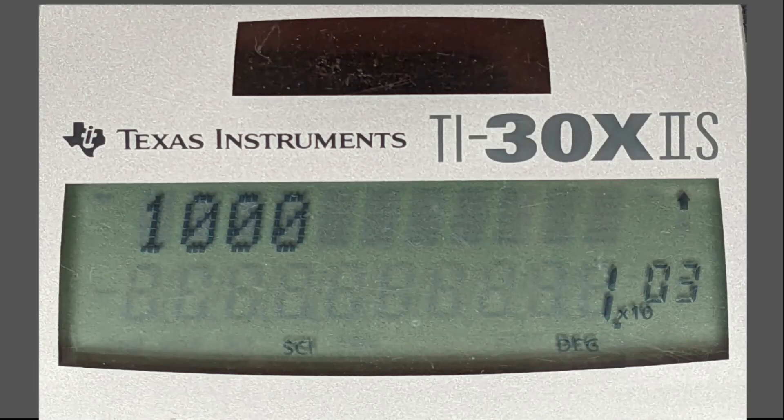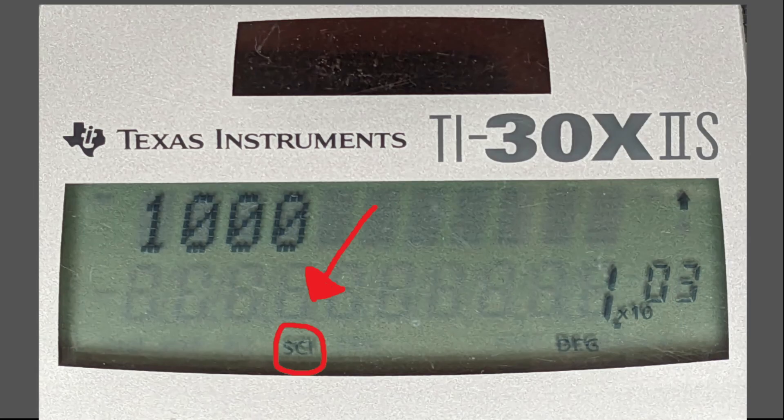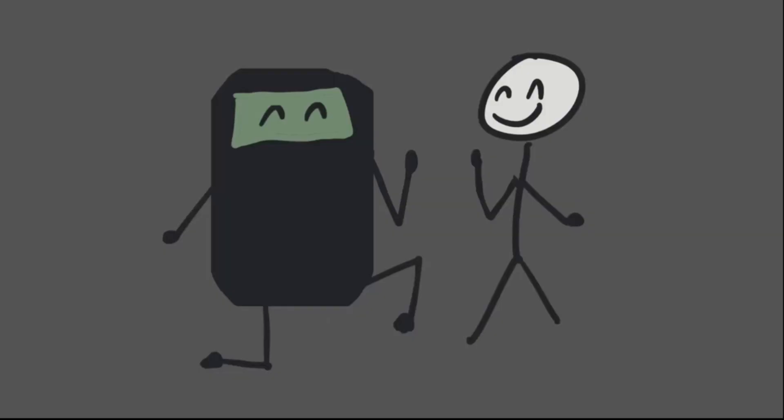Now, real quick, if you ever want to check if you're in SCI mode, there'll be a little SCI that pops up at the bottom of your screen if you are, like this. Together, these two functions are going to make your time with your TI-30 XIIS calculator a lot more pleasant. Remember, you can always jump back to specific parts of the video if you need a quick refresh in the future. See you later!